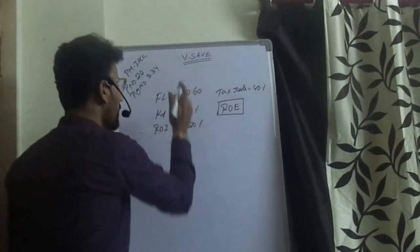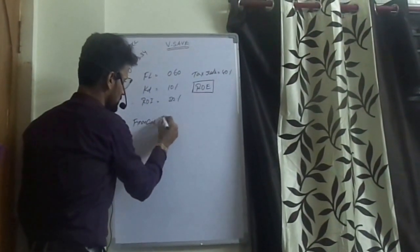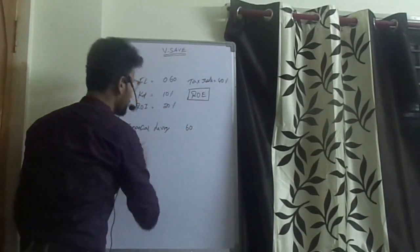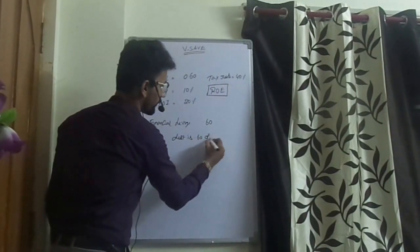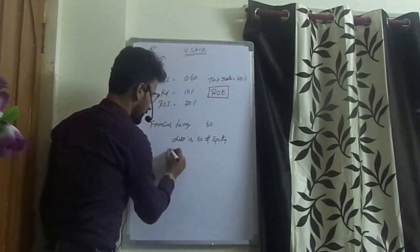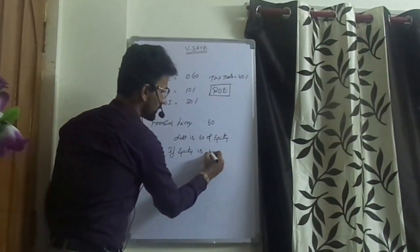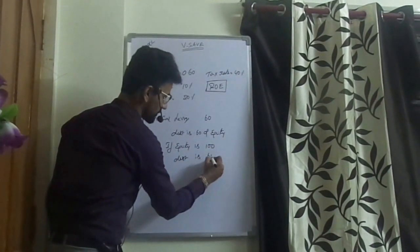Here it says financial leverage is 0.6, which means debt is 0.6 of equity. If equity is 100, debt is 60.